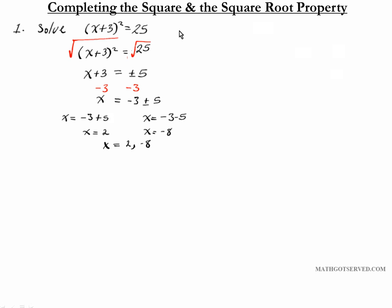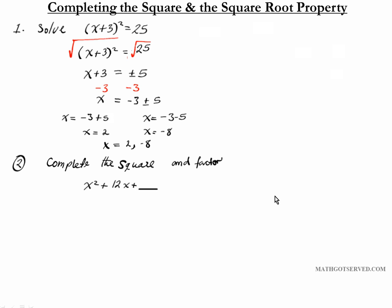Now how do we get a quadratic equation into that format so we can solve using the square root property? In order to do that we have to know how to complete the square. Let's take a look at an example where we have to complete an incomplete square and then factor the resulting expression. Say we have this binomial expression x squared plus 12x — the task is to complete the square by finding what term we can add to create a perfect square trinomial.